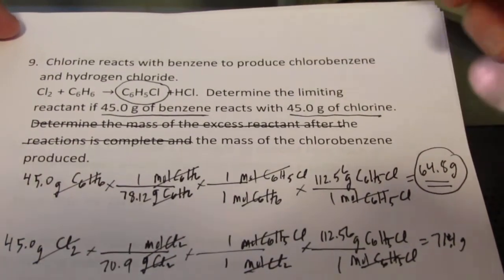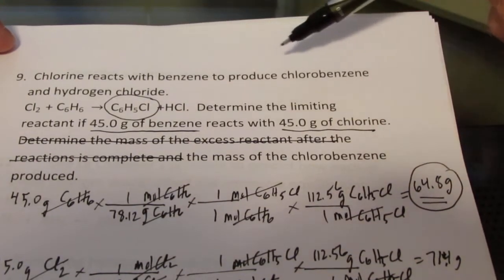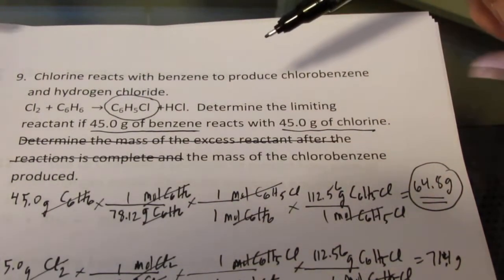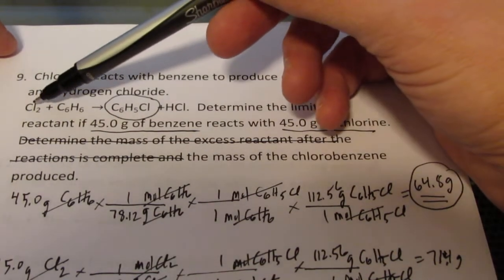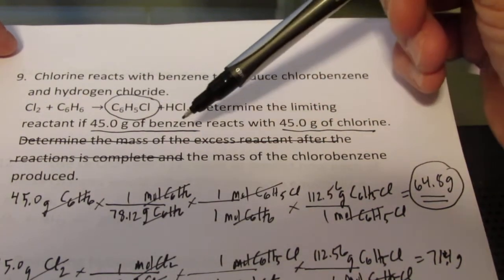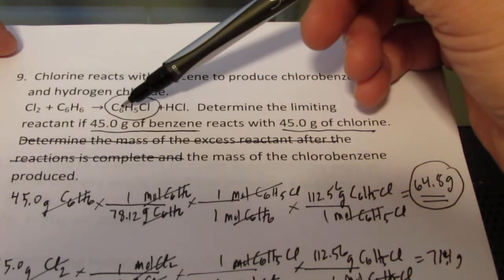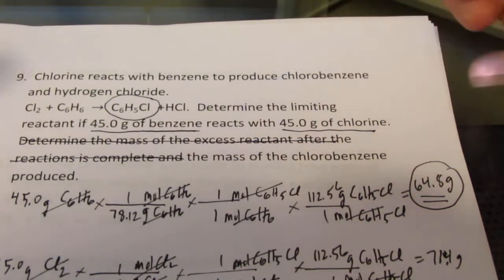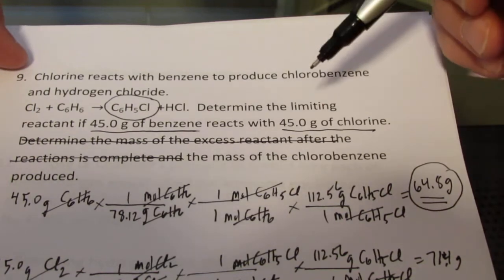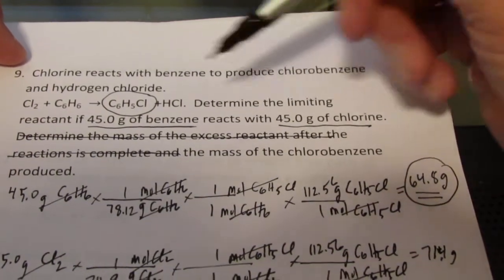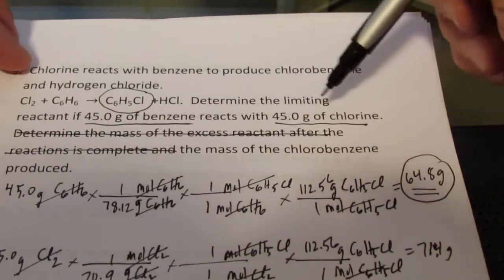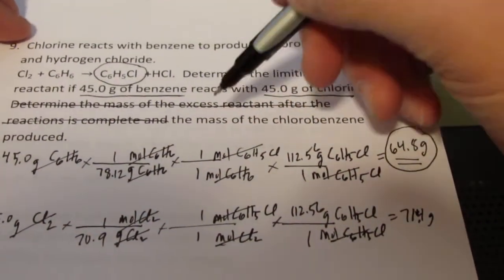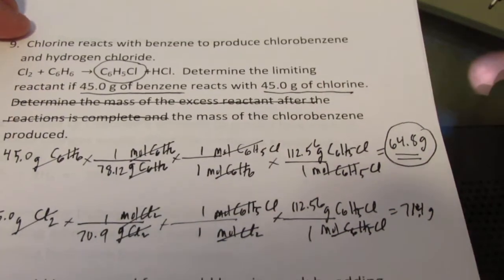So let's read through number nine quickly. Chlorine reacts with benzene to produce chlorobenzene and hydrogen chloride. So here's the reaction, and you'll notice it's nicely balanced. Cl₂ + C₆H₆ → C₆H₅Cl + HCl. Determine the limiting reactant if 45.0 g of benzene reacts with 45.0 g of chlorine, and we'll find the mass of chlorobenzene that is produced.